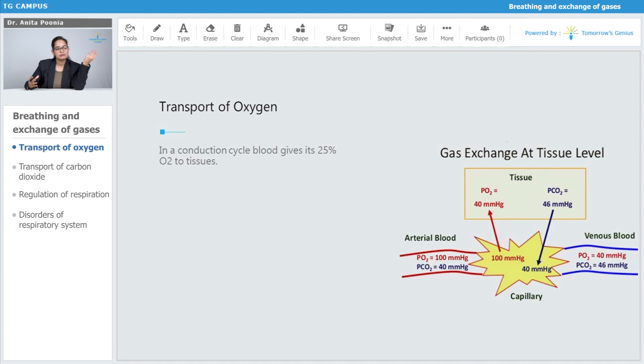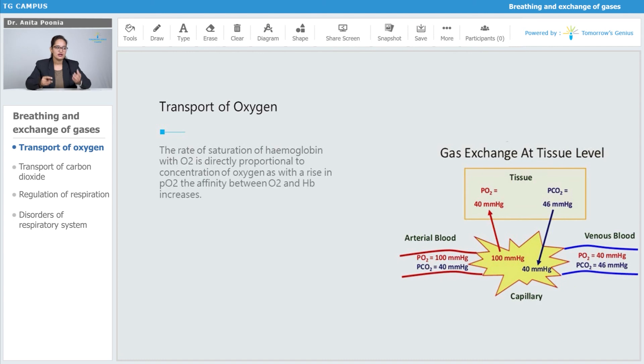In a conduction cycle, blood gives 25% of oxygen to the tissues. The rate of saturation of hemoglobin with oxygen is directly proportional to the concentration of oxygen. With a rise in the partial pressure of oxygen, the affinity between oxygen and hemoglobin increases.